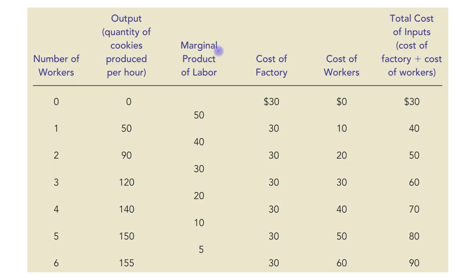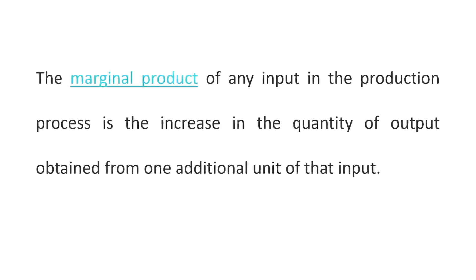Next we will look at the third column, which is the marginal product of labor. The marginal product of any input in the production process is the increase in the quantity of output obtained from one additional unit of that input.